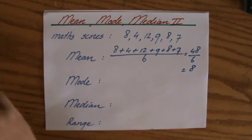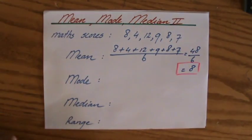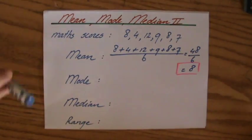So the mean score would be an 8. So the sum of all the values divided by the amount of values, and that is a very nice grade if it's out of 10 for your maths.